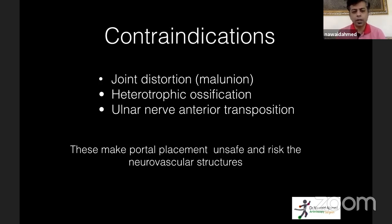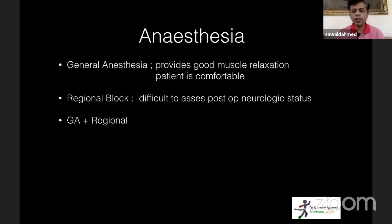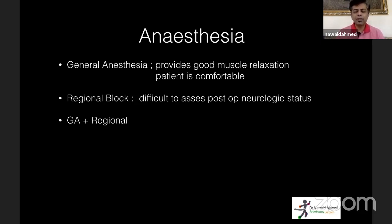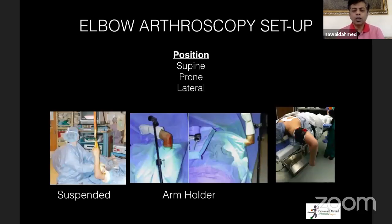Regarding anesthesia, we prefer general anesthesia because it provides good muscle relaxation and the patient is comfortable. If there are comorbidities, we use regional anesthesia, but the problem is that we can't access post-op neurological status immediately. When I do elbow arthroscopy, I want to know right away whether I've injured a nerve.